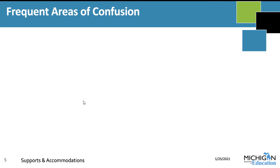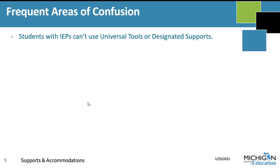Let's go through some frequent areas of confusion related to this framework. These are true or false statements — think about whether each is true or false as I read them. First: students with IEPs can't use universal tools or designated supports. Based on the information I just shared, is that true or false? This is actually a false statement. Students who have IEPs are eligible to use anything from any category, as long as that need is documented and they truly have a need for it.